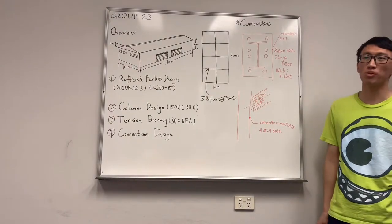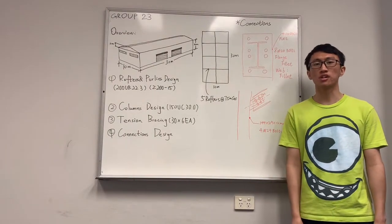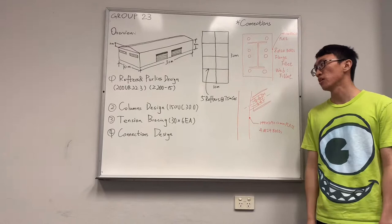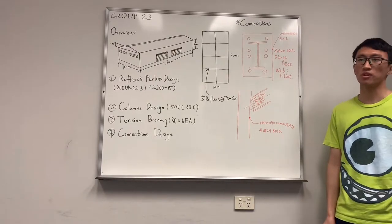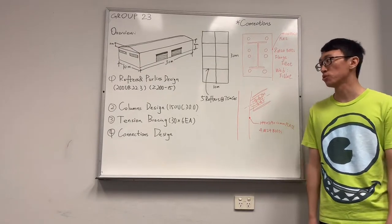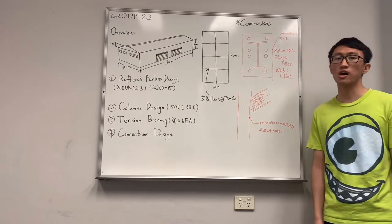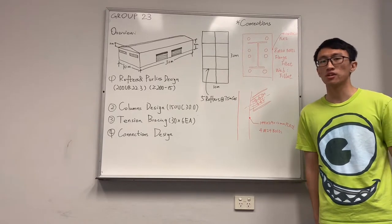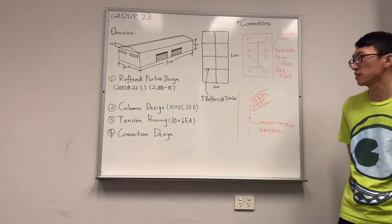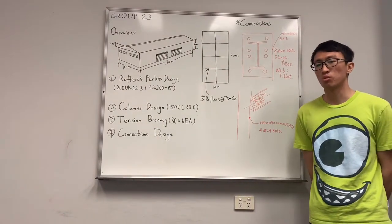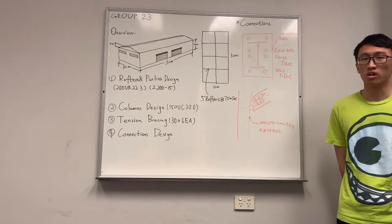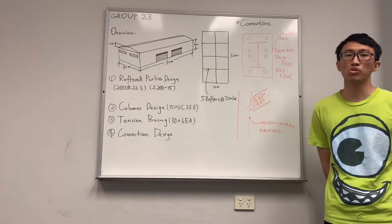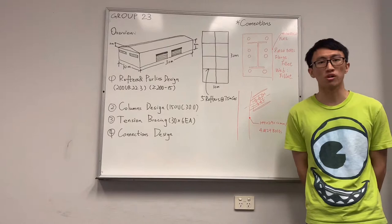Now it's my turn to give you a brief introduction about how we selected the tension bracing. By using the rafters and the columns we selected just now, the displacement will be more than the limited range. Thus, we decided to use the equal angle as our tension bracing. Based on the data given by the Space Gass, the most economical one was the 38 times 6 equal angle. What's more, after calculation, our design load will be less than the capacity of the equal angle, which can ensure our equal angle will be safe in our construction.